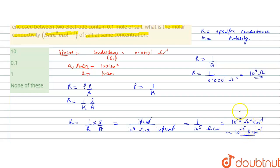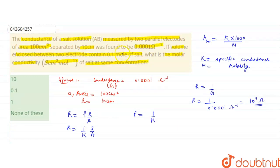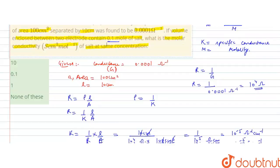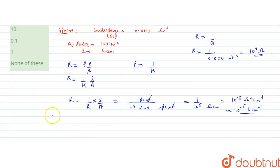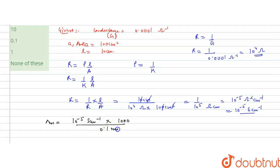Now we have the specific conductance and molarity is 0.1 molar. So molar conductivity = K × 1000 / molarity = 10⁻⁵ Siemens cm⁻¹ × 1000 / 0.1 = 10⁻⁵ × 10⁴ = 10⁻¹ Siemens cm⁻¹ per mol, which equals 0.1.